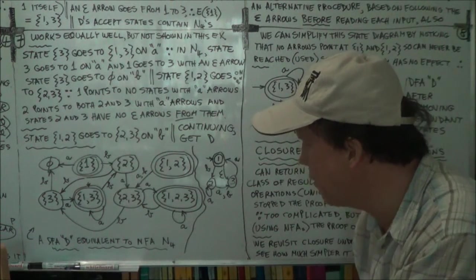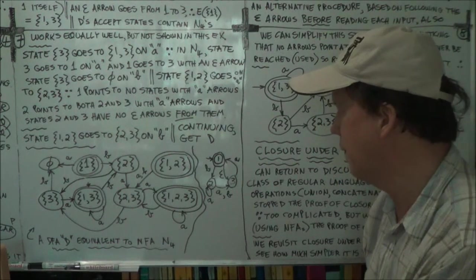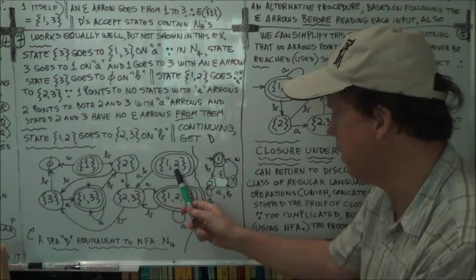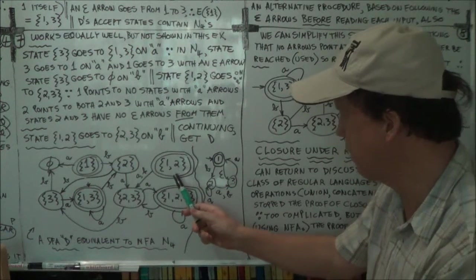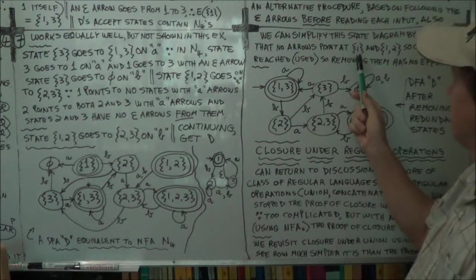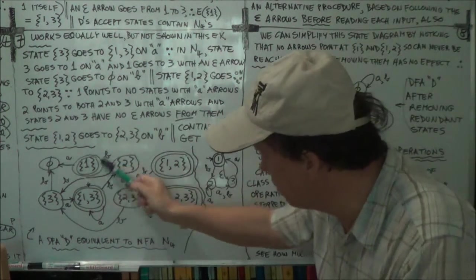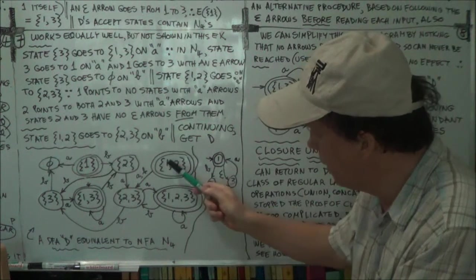Now, are there any others that have no arrows to them, no transitions to them? This one, I think, also. Correct. Yeah. So we can kill this one and this one. Yeah, so one and one, two. So this one and this one we can kill.